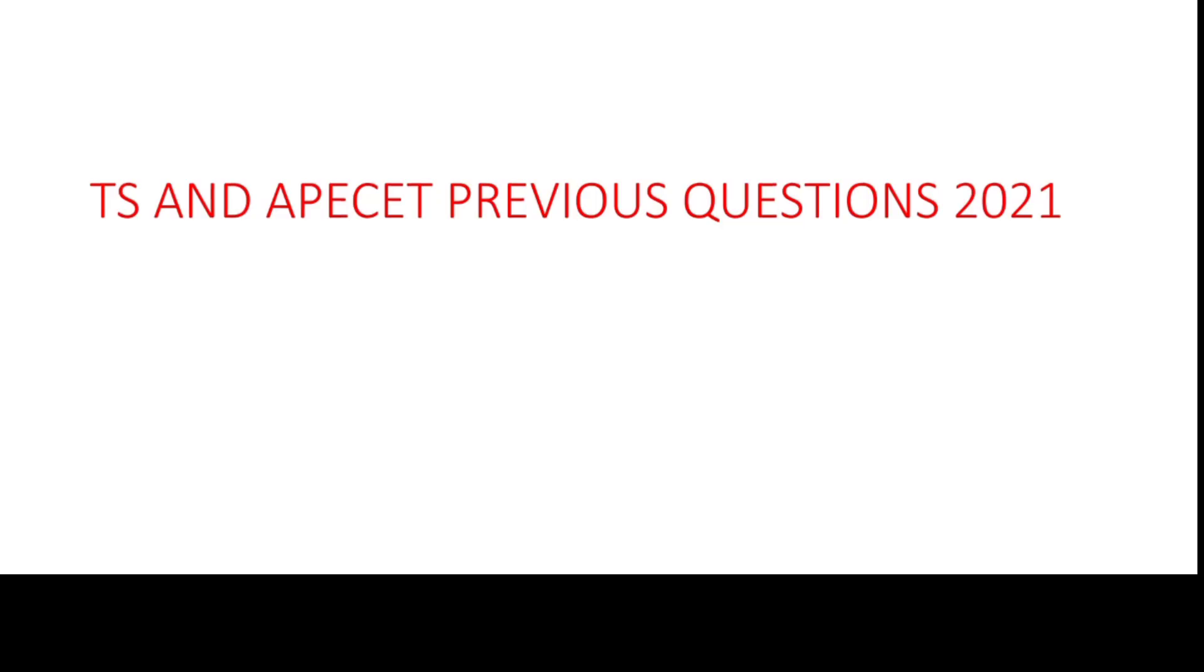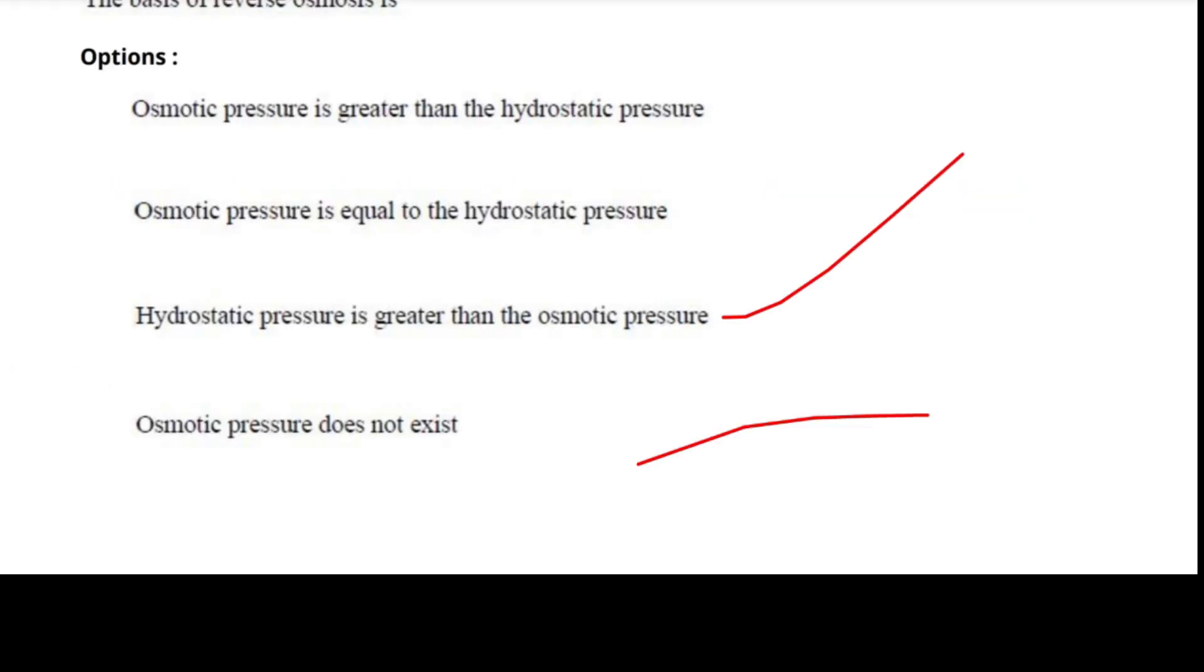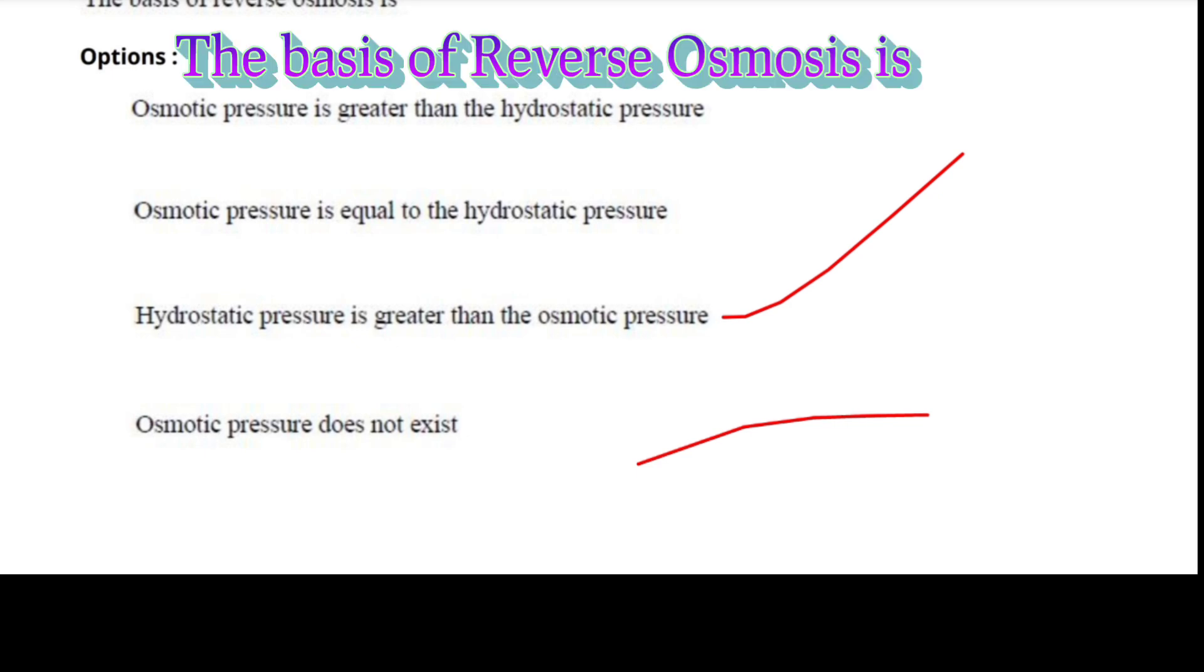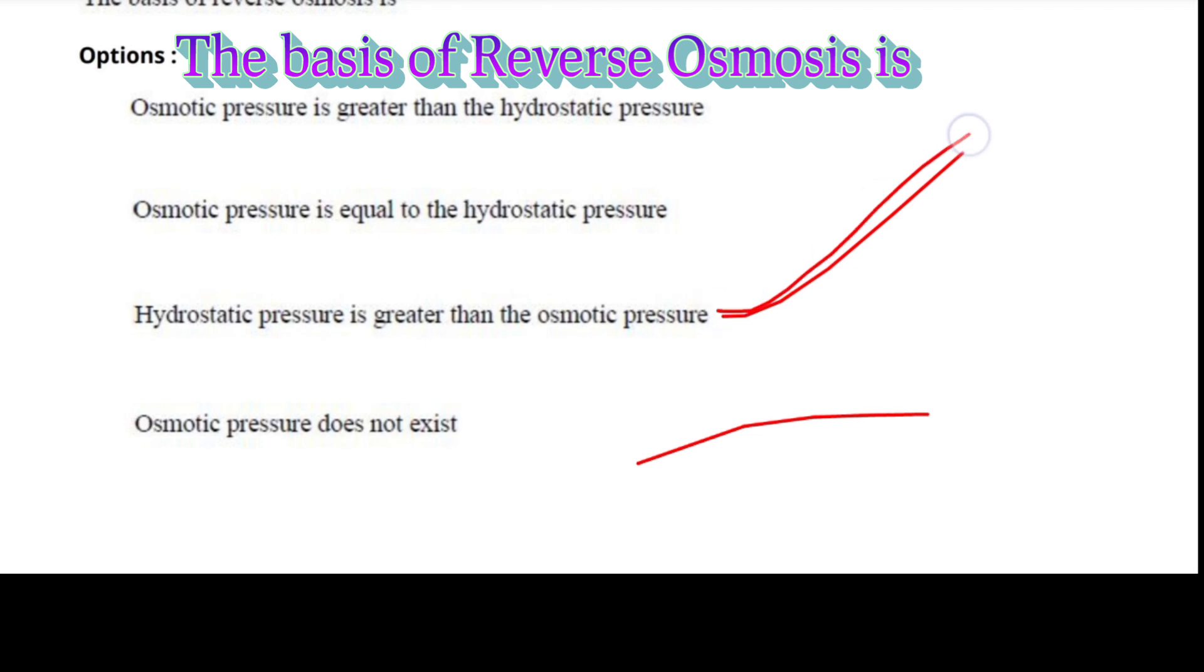Hello everyone, today we will discuss the previous EZ questions of chemistry in the year 2021. The first question was on the basis of reverse osmosis. The options were: osmotic pressure is greater than the hydrostatic pressure, osmotic pressure equals the hydrostatic pressure, hydrostatic pressure is greater than the osmotic pressure, and osmotic pressure does not exist. The answer is hydrostatic pressure is greater than the osmotic pressure as a result of the hydrostatic pressure.